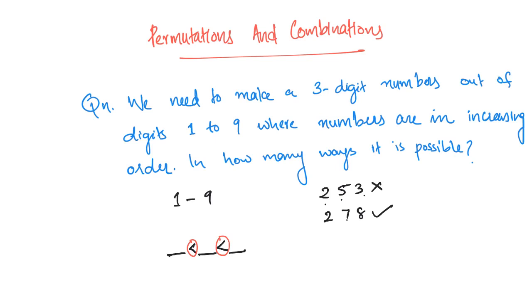We will fill in increasing order. The last digit can be filled in 9 ways because there are 9 numbers. If we fill one of the numbers in the last digit, the second digit can be filled in 8 ways. If so, the first digit can be filled in 7 ways.